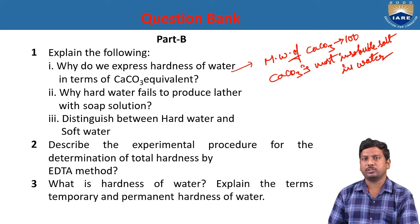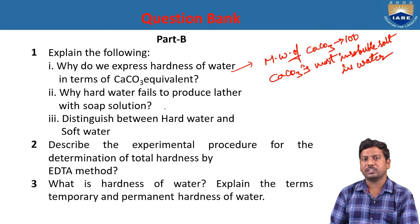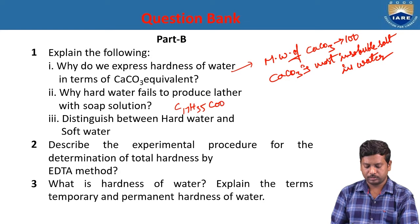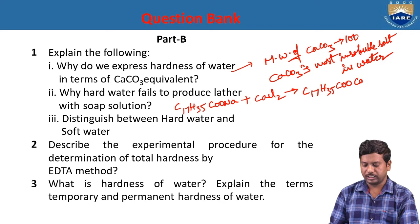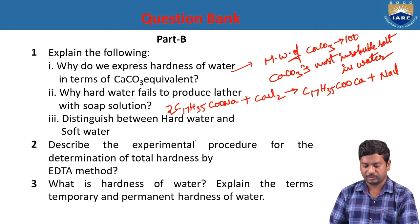Why does hard water fail to produce lather with soap? Hard water contains salts of calcium and magnesium — bicarbonates, chlorides, and sulphates. Soap is the sodium salt of fatty acids: C₁₇H₃₅COO⁻Na⁺. When it reacts with hard water containing calcium chloride, it gives calcium stearate — a white curdy precipitate — and sodium chloride. Because of the formation of calcium stearate, it cannot give lather with soap.